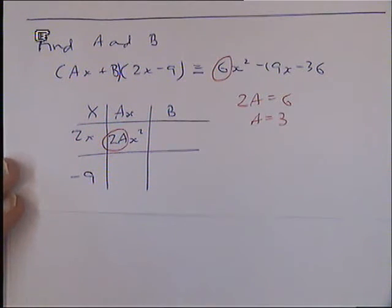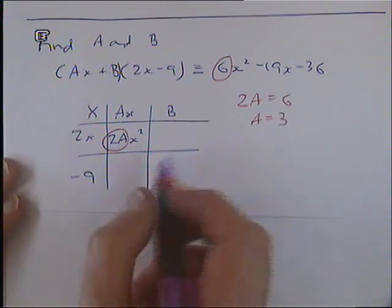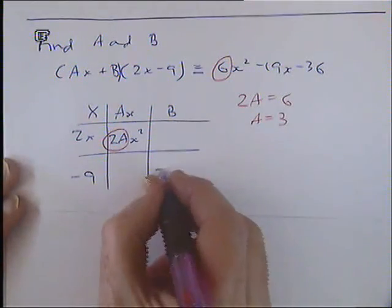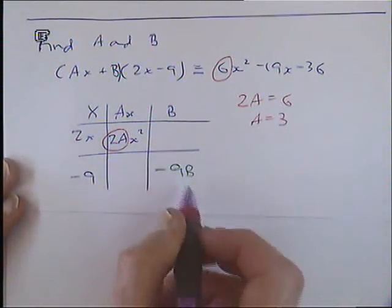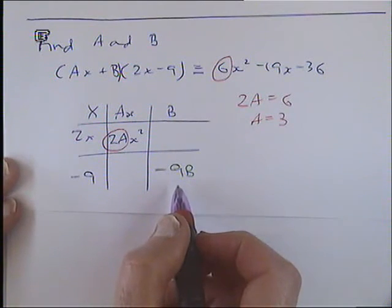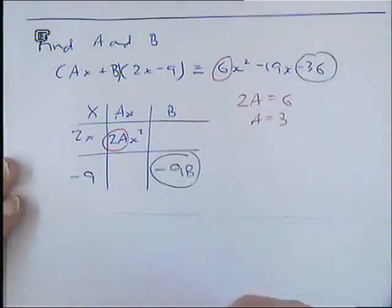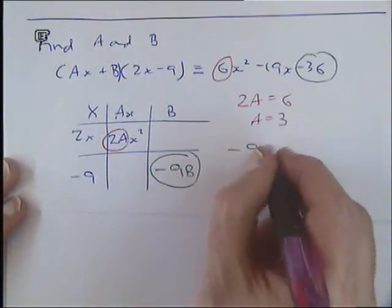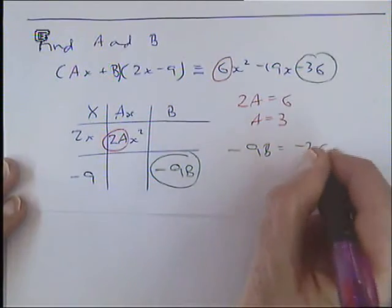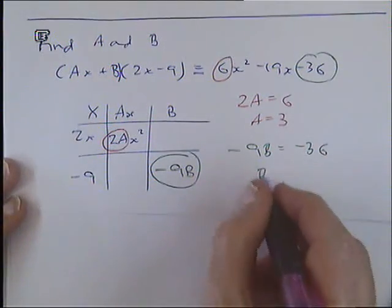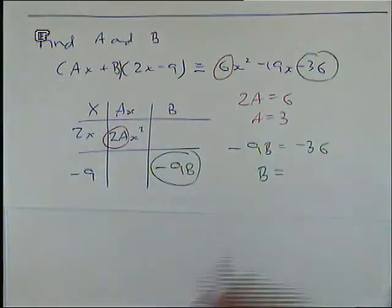And what other one then could you do something? The bottom one. Bottom right, over here. B times by minus 9 is minus 9b. That is the only bit you're going to have no x's in. So that bit there must equate to this bit over here. So minus 9b must be equal to minus 36. So b must be equal to 4.